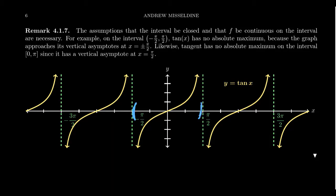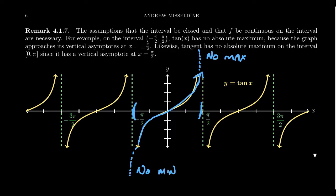On an open interval with the tangent function, notice what happens on the graph: we get arbitrarily close to π/2 but never actually touch it. Because that coincides with the vertical asymptote, the function gets bigger and bigger with no absolute maximum. Similarly, approaching negative π/2, the function goes toward negative infinity with no minimum value. There's no single number you can't get past — you approach infinity and negative infinity without bound. With an open interval, large behavior like a vertical asymptote can squeeze in, so we need a closed interval to guarantee absolute extrema.